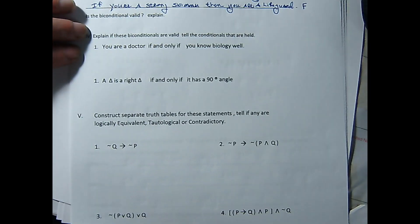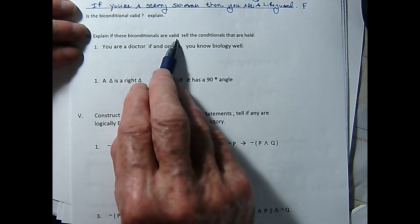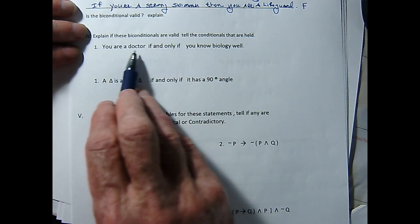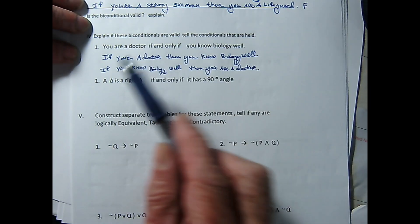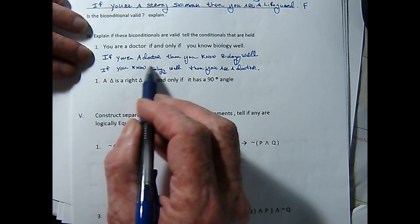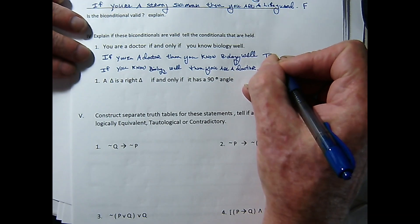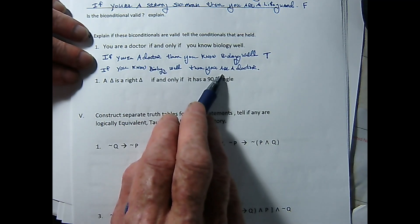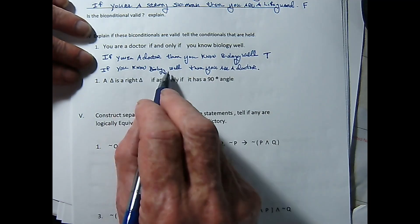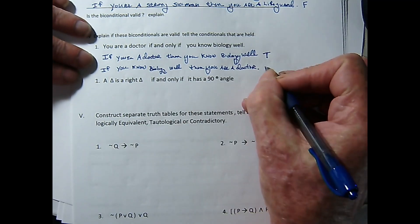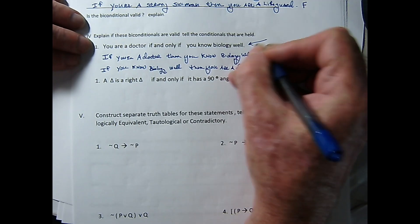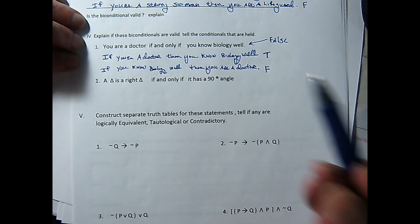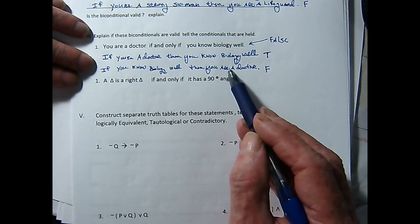We're going to do that a little bit more. You are a doctor if and only if you know biology well. I'm going to think about the two conditionals it holds. If you're a doctor, then you know biology well — and I'm going to say that is a true statement. Every doctor I get near knows biology backwards and forwards. But this biconditional also holds the statement: if you know biology well, then you're a doctor. I don't think that's necessarily so — there are lots of people who are marvelously knowledgeable about biology but still perhaps not a doctor. So I've got to call that false, and since it holds both of these conditionals, I've got to say that the biconditional is false. The biconditional holds the converse, confirming that if you know biology, then you must be a doctor — and that is not true.